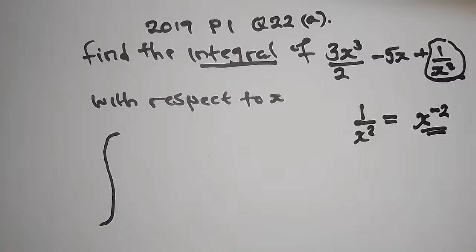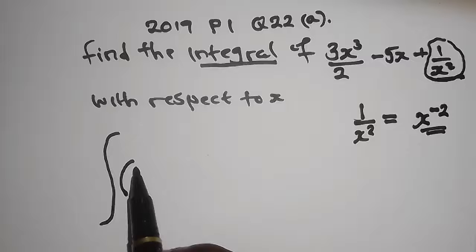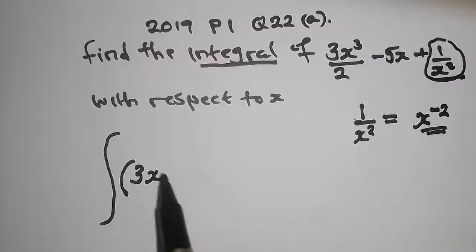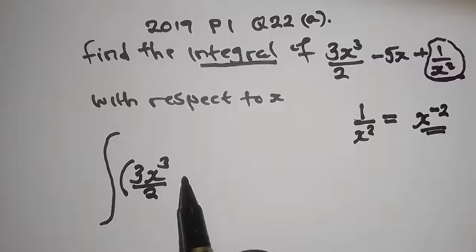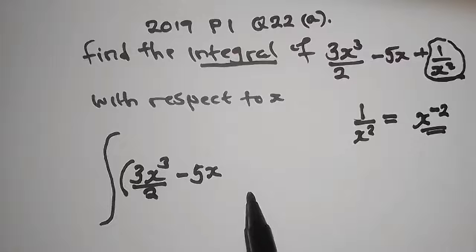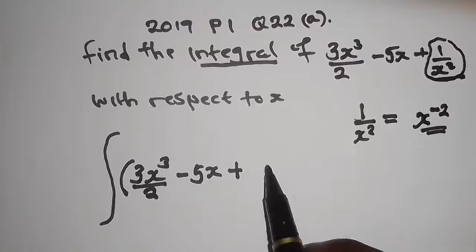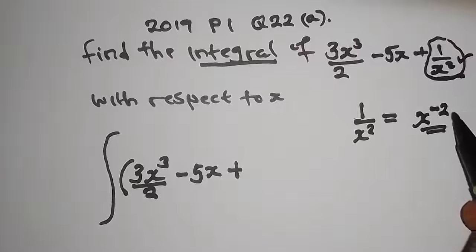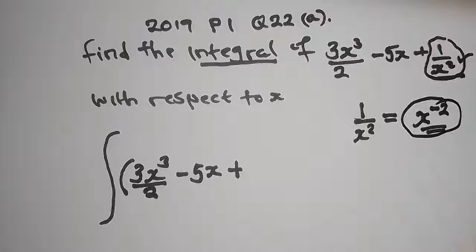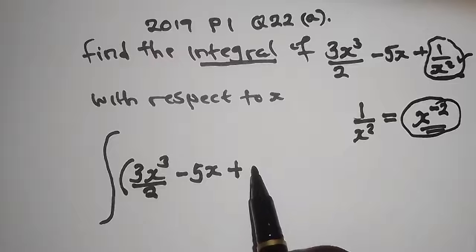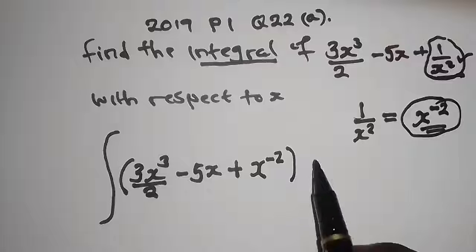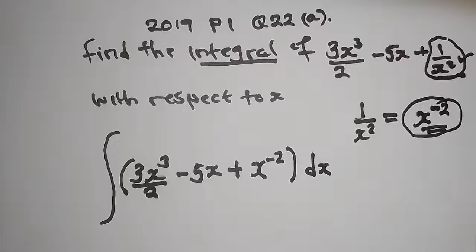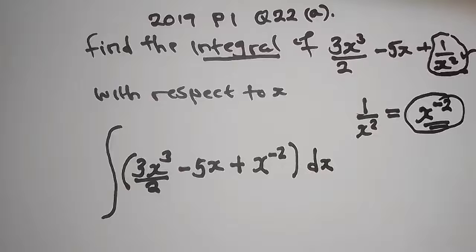When looking at integration, we use the integral symbol. We write the expression as: the integral of 3x to the power 3 divided by 2, minus 5x, plus x to the power negative 2, all with respect to x — dx.